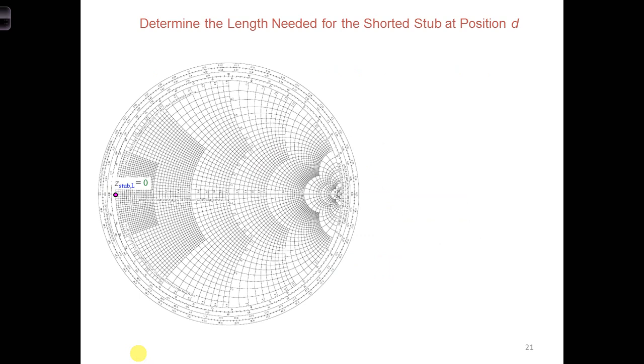So we start by plotting the load impedance of the shorted stub, capital ZL equals zero, and normalized, it's also equal to zero. Now, here's an easy thing to forget. We're dealing with circuit elements in parallel, so we need to make sure we convert to admittances. We want to flip through the origin, flip this dot through the origin, which transforms it over to here to get Y stub L. So now we have infinity.